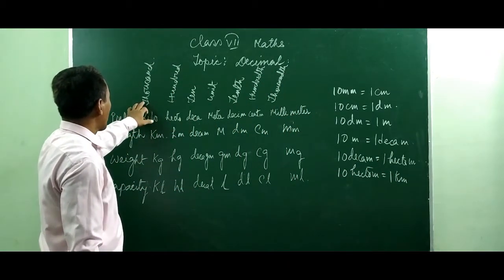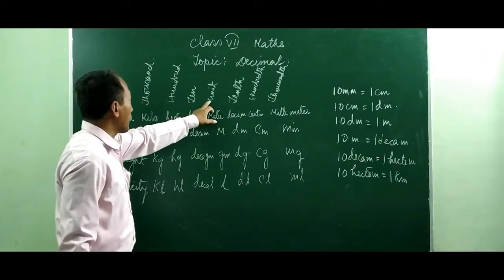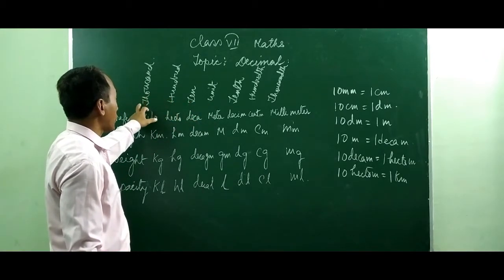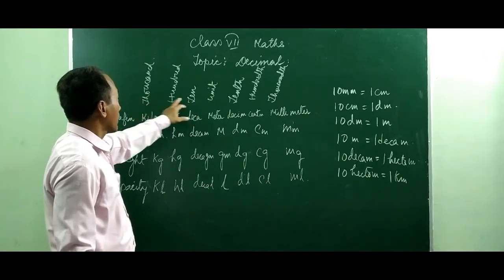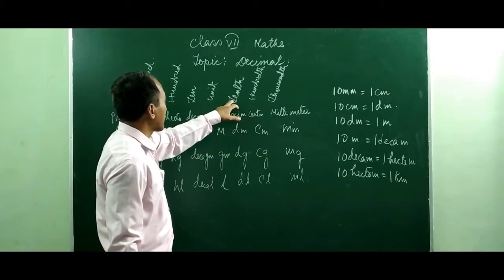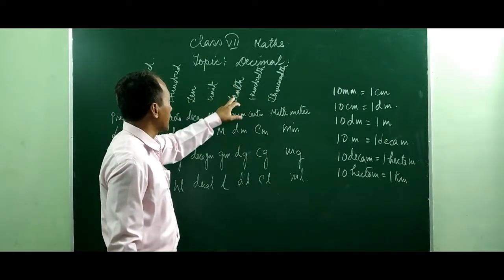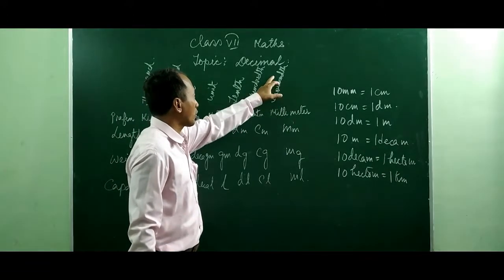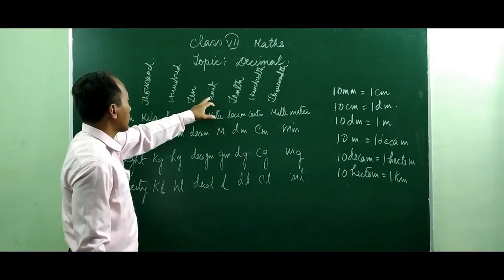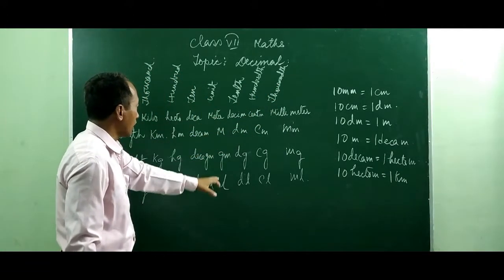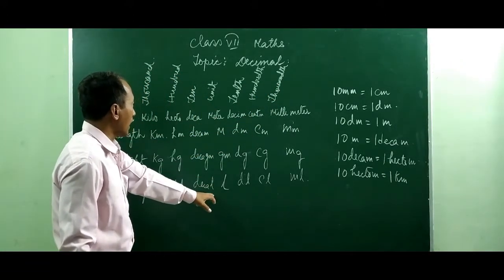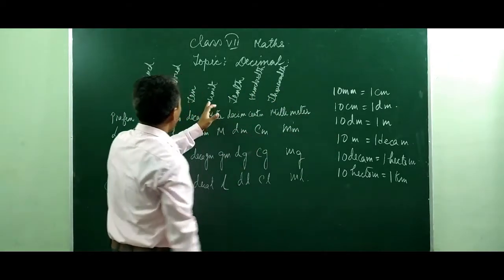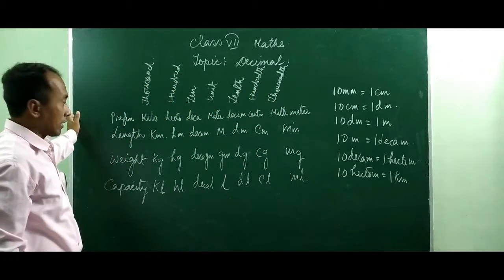This is the unit place, this is the tenth place, this is the hundredth place, this is the thousandth place. After the unit place there is the tenth place, then the hundredth place, then the thousandth place. So the unit is the unit line — after unit, this side is the decimal side and this side is the number side.